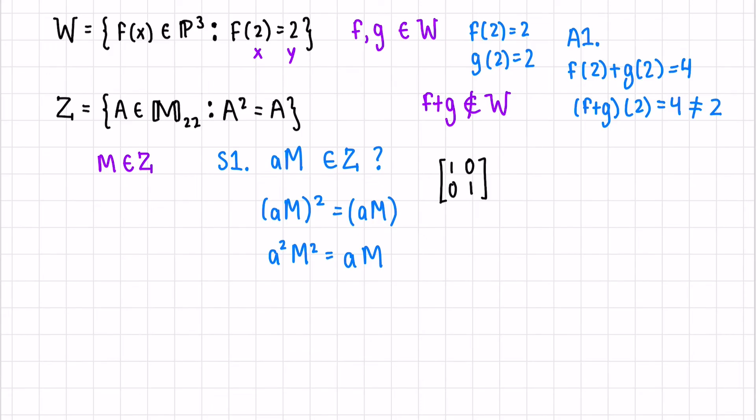The identity matrix has this property, right? So if we square it and we multiply these matrices, we get the identity matrix back. So the identity matrix is a part of this set Z.